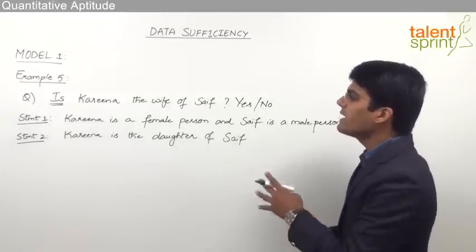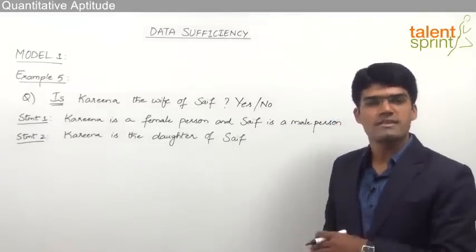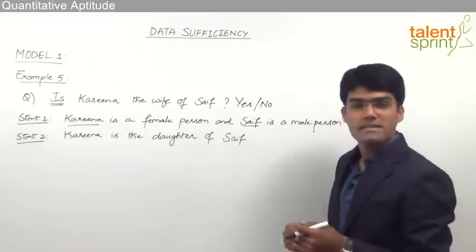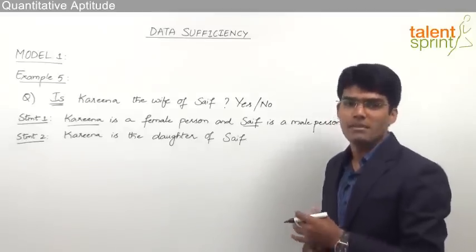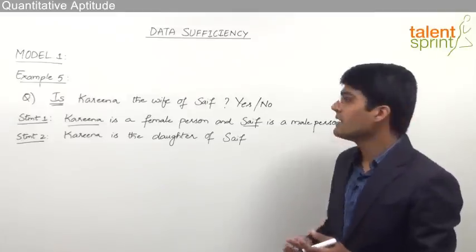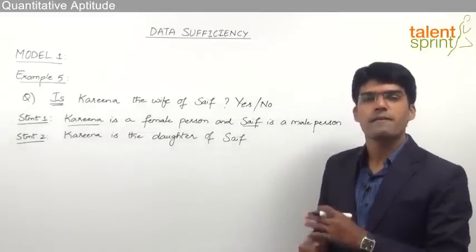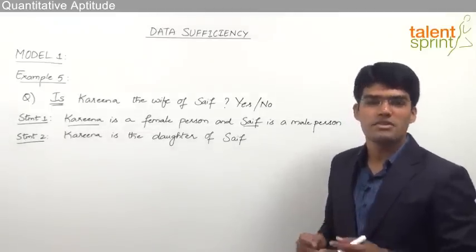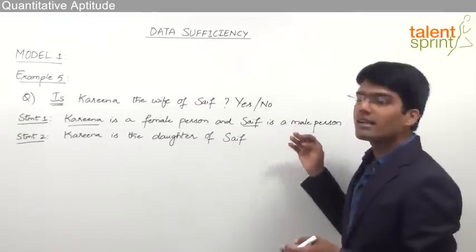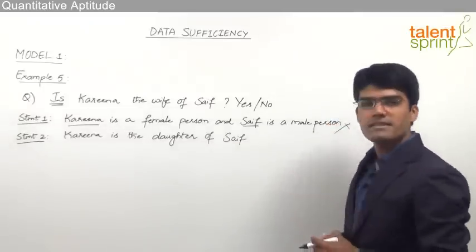Statement 1 says Kareena is a female person and Saif is a male person — the gender of the two persons have been mentioned. Now just because Kareena is a female person and Saif is a male person doesn't mean that they are husband and wife. We cannot say that Kareena is the wife of Saif from statement 1 alone, so statement 1 is insufficient to answer the question.